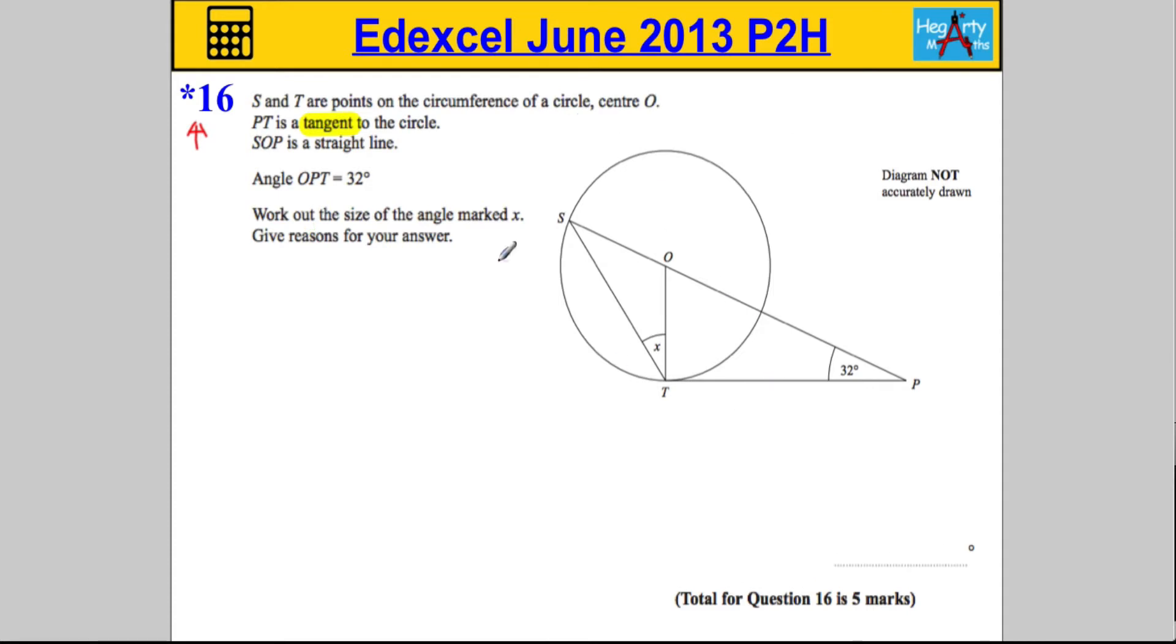Diving straight in here, we're at question 16, coming towards the end of the paper, so we're getting in tricky territory. It's a circle in the diagram, so this is a circle theorem question. I always tell my students when I see the word tangent and we're dealing with circle theorem questions...